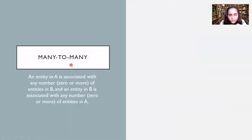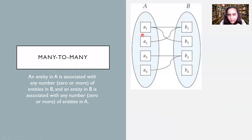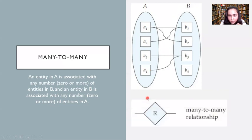The next type is many-to-many cardinality, where an entity in A is associated with any number — zero or more — of entities in B, and an entity in B is associated with any number — zero or more — of entities in A. There are no rules; you can attach anything with anything. A1 with B1 and B2, A2 with only B1, A3 with B3, and A4 also with B3. To show it symbolically, you make a rhombus with two lines without arrows on either side — that makes a many-to-many relationship in an ER diagram.